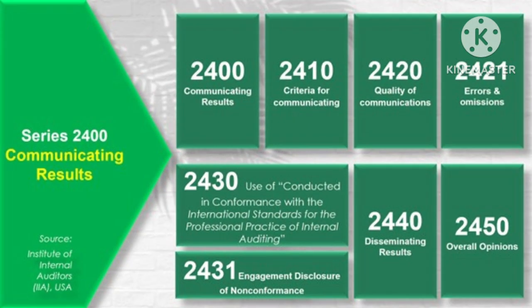This standard and the whole series is very important for all the auditors. It is overall comprised of around 8 standards in the same series: starting from standard 2400 communicating results, then 2410 criteria for communicating, 2420 quality of communications, 2421 errors and omissions, 2430 use of wordings of conducted in conformance with the international standards for the professional practice of internal auditing, 2431 engagement disclosure of non-conformance, 2440 disseminating results, and 2450 overall opinions.